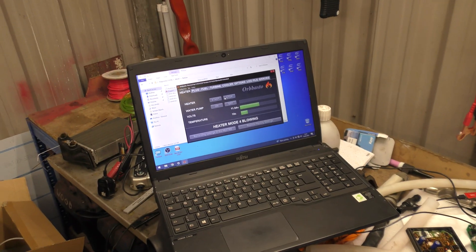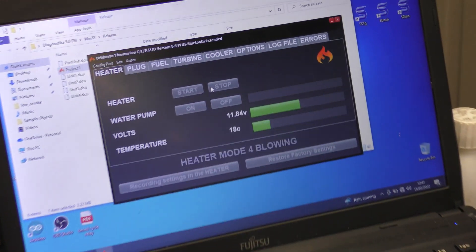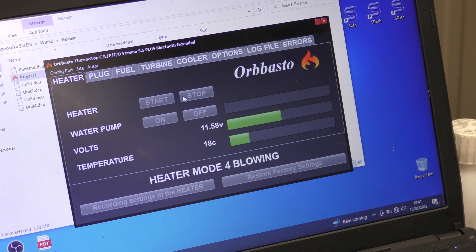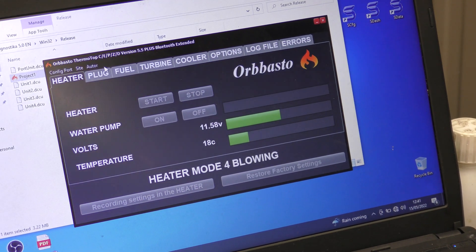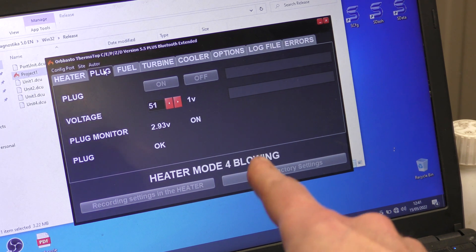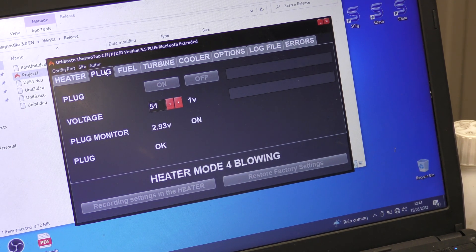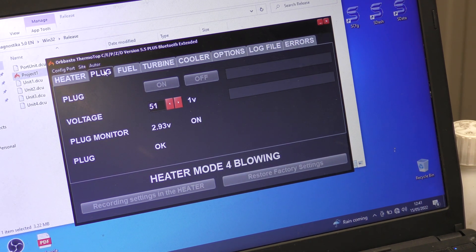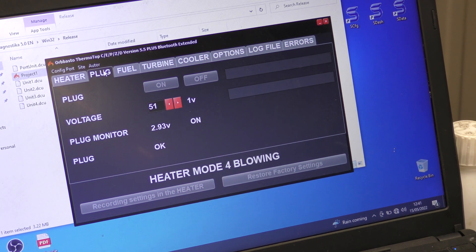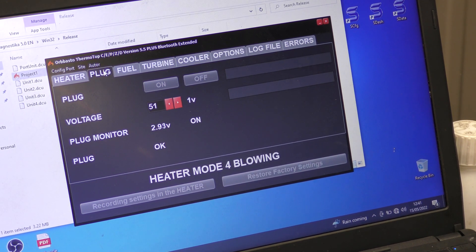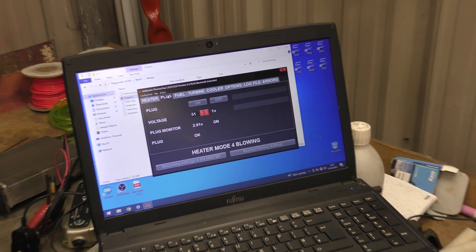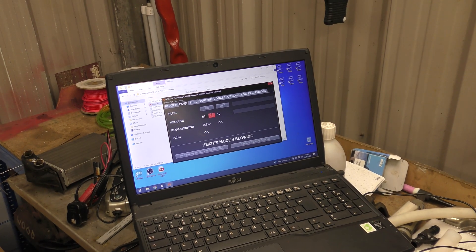And then the heater goes into blowing mode to cool down because it thinks it's hot. Well, it knows it's hot. The monitor comes on because it's probably drawing 10 amps just now to burn the excess fuel off the glow plug. But I'm going to let that run for five minutes and then I'll come back and we'll talk to you.